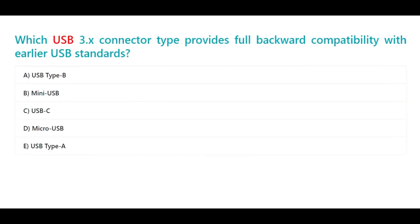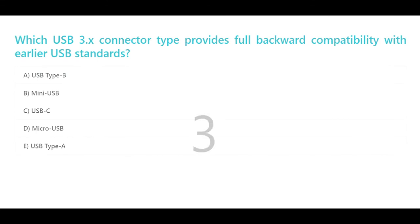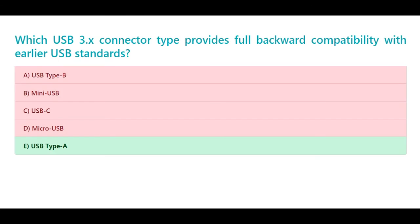Which USB 3.x connector type provides full backward compatibility with earlier USB standards? A. USB Type-B. B. Mini USB. C. USB-C. D. Micro USB. E. USB Type-A. The correct answer is E. USB Type-A.